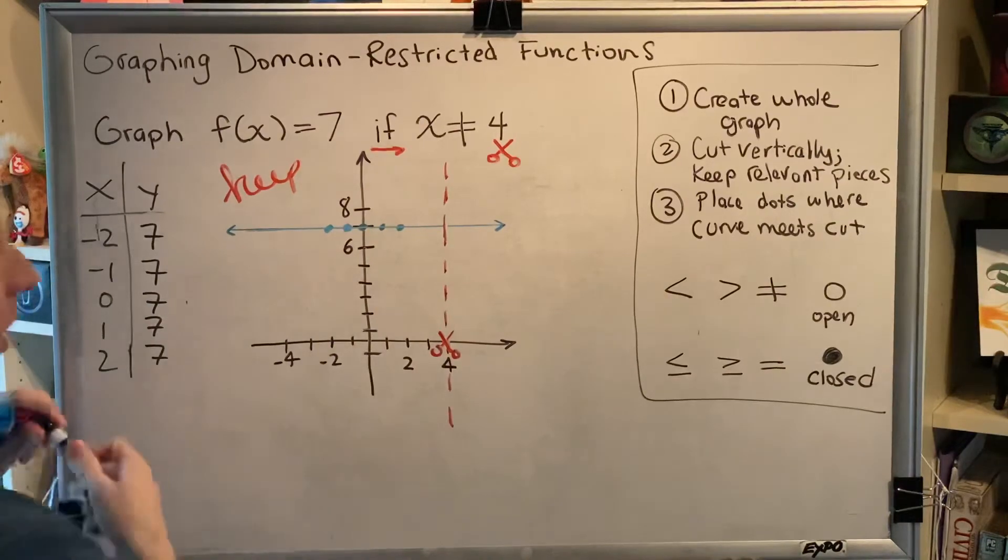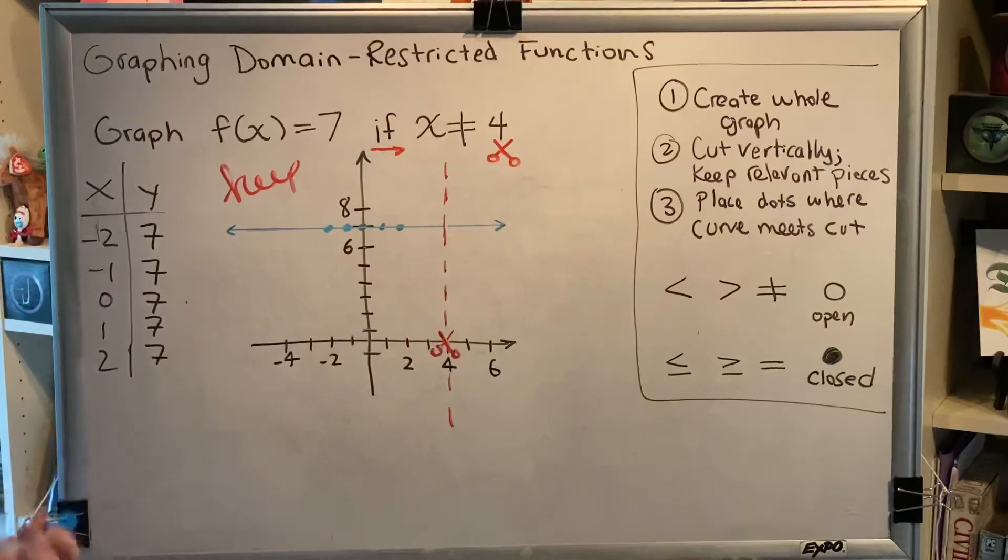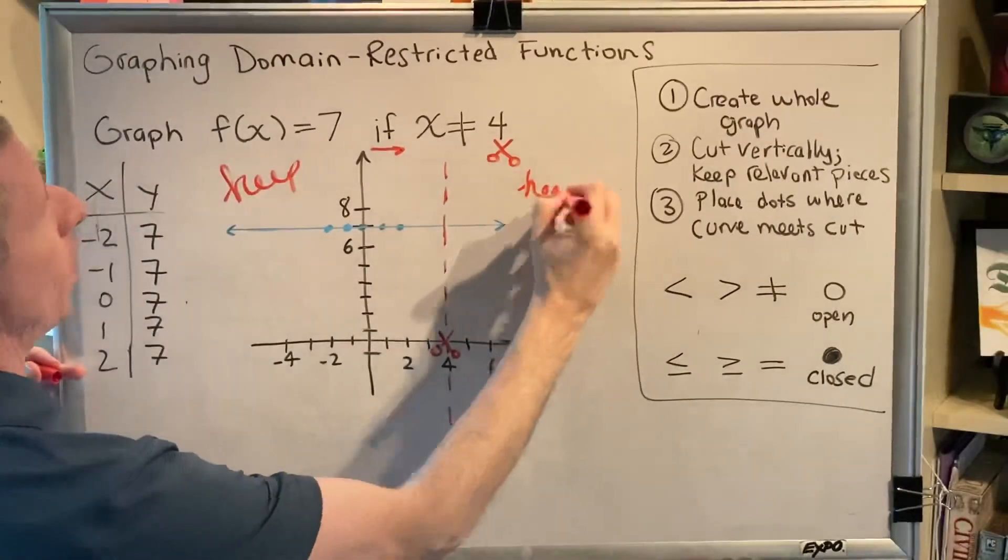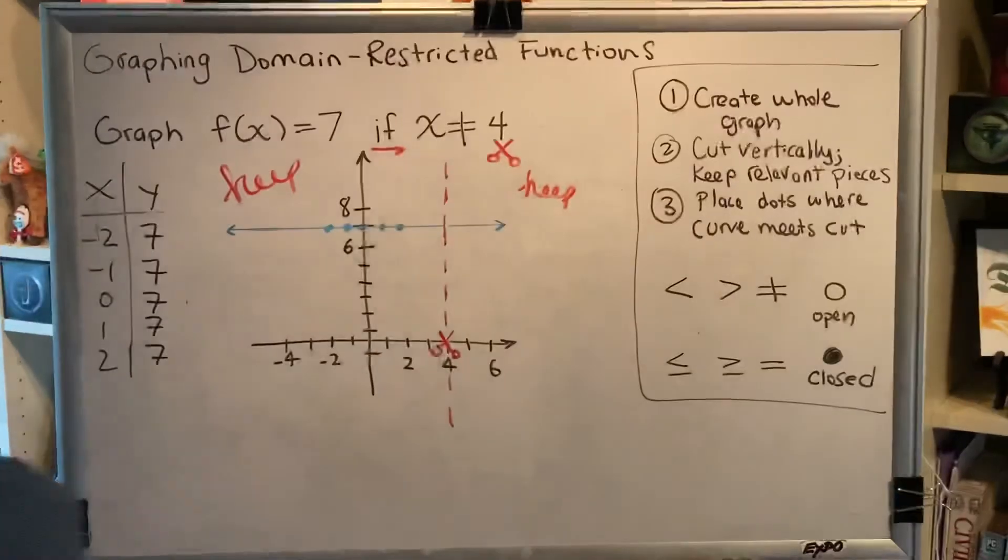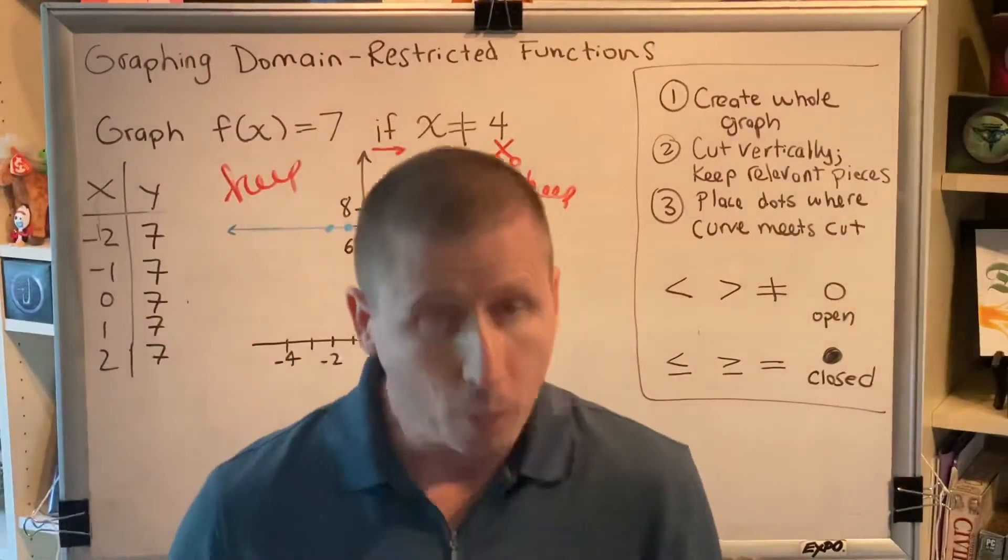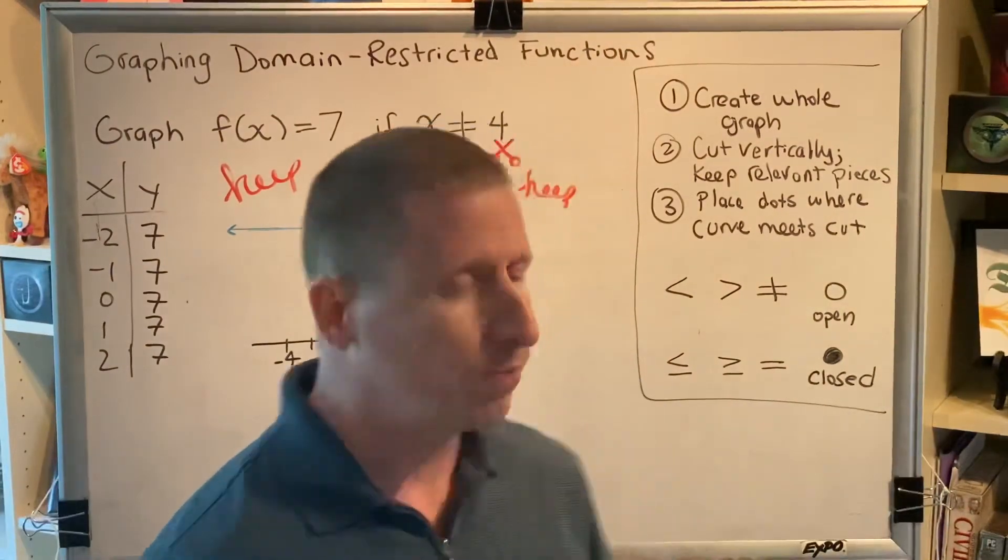And when I look over here to the right, I see numbers like 5 and 6 and 7. Those are also not 4. So I want to keep the right side as well. So for this graph, interestingly, we may cut it to put a hole in our graph, but we keep both sides of the cut.